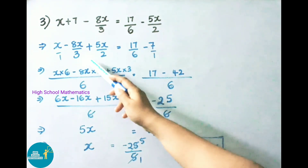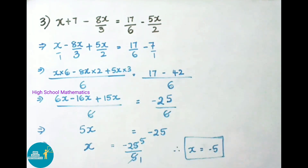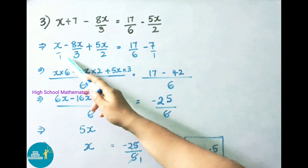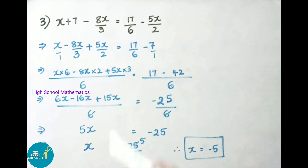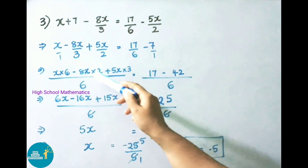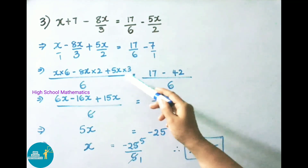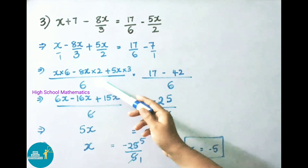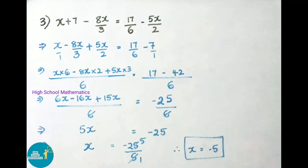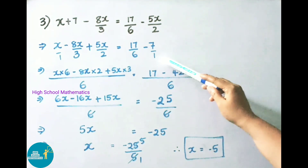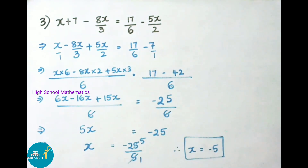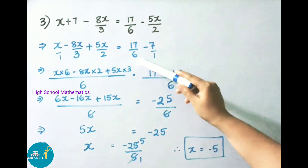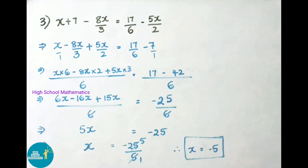Now we find LCM for denominators 3 and 2, which is 6. For the left side with denominator 1, 1×6=6 times, so x×6 - 8x×2 + 5x×3, all over 6. On the right side, 7 has denominator 1, so LCM of 6 and 1 is 6. Cross-multiplying: 17×1 - 6×7 = 17 - 42 = -25. So the right side is -25/6.